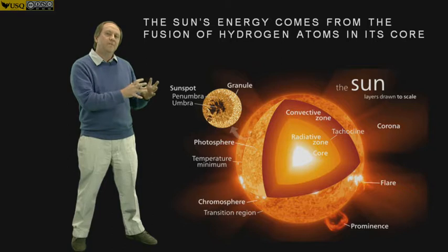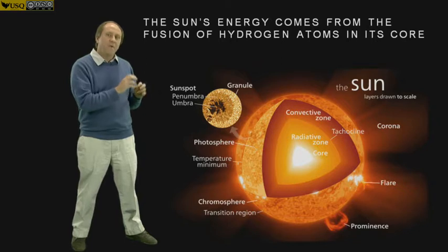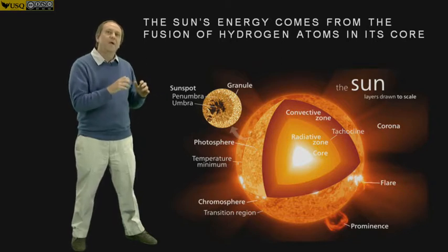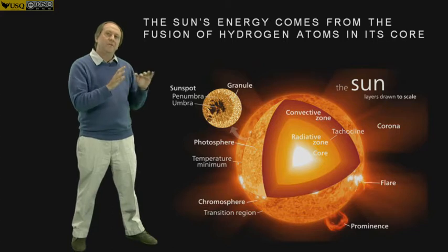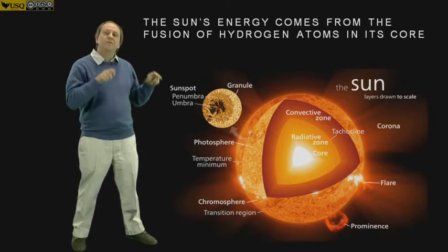The energy released by the core makes its way to the surface through two other layers. The first is a radiative zone where the energy comes through purely by radiation, and then the energy hits an area called the convective zone or convective layer, and that's where energy is transported by a motion similar to the boiling of water.